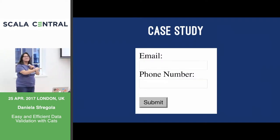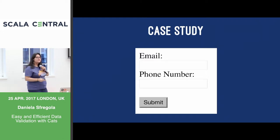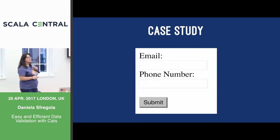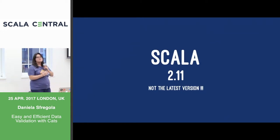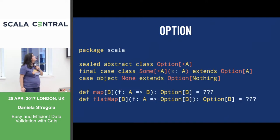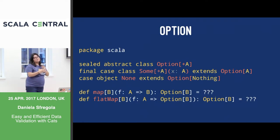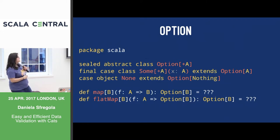Let's write some code. I have this beautiful form that gets an email and a phone number, and I have to submit it. So let's start our journey. We're in Scala 2.11 — we just started, we don't know it's not the latest version, but it's fine. We're not the cool kids yet. And we start with Option. Option is what we saw before — it's just a type that either has Some of a value or None.